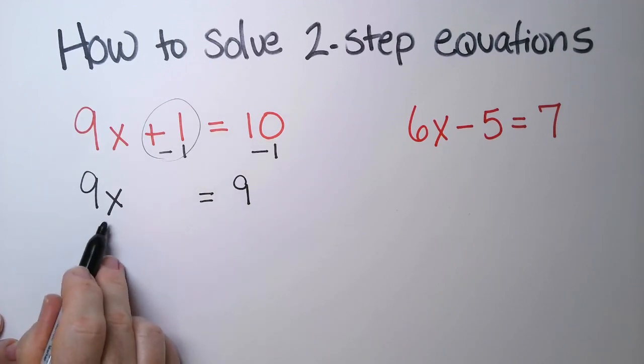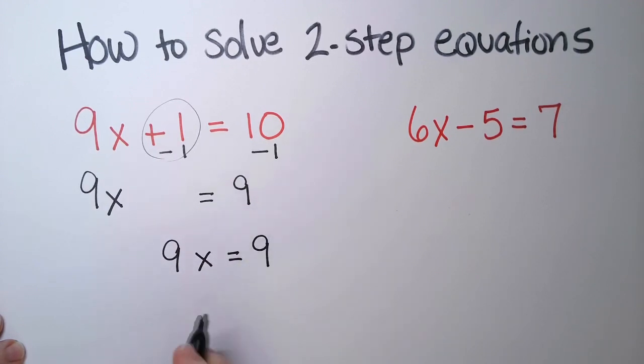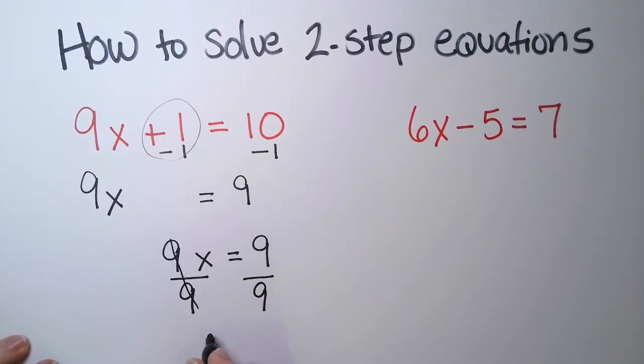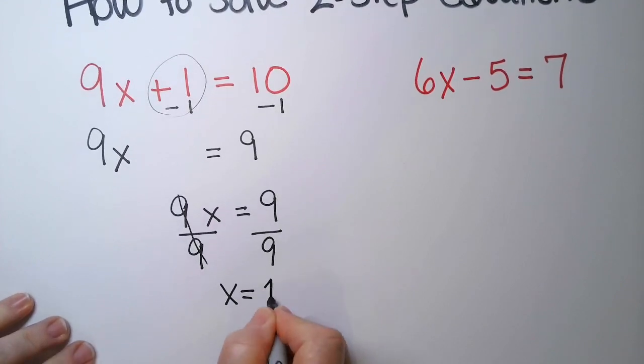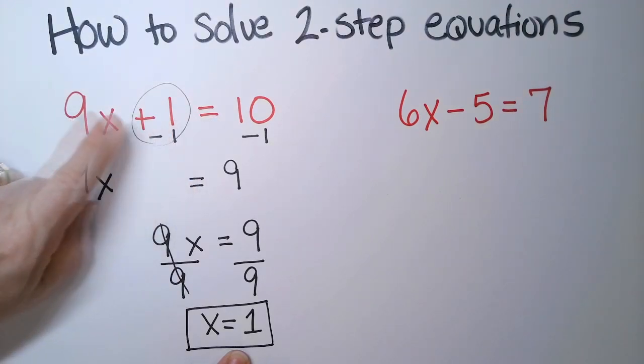We're not done yet, though, because x is not by itself. So I'll rewrite this so it's more together. To get x by itself, instead of subtracting 9x, because the x is attached, to get it detached, all we do is divide by whatever number is in front of the x. So that happens to be nine. Nine over nine is one. Nine over nine over here is one. So my answer is x equals one. This is a unique value of x that if you put it into this, will make this statement true. Nine times one is nine, plus one is ten, and that's true.